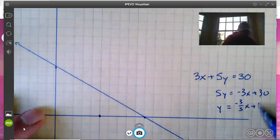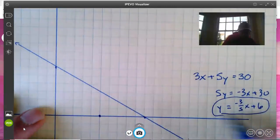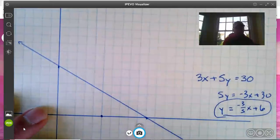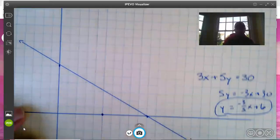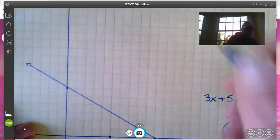Then we know it has a slope of negative 3/5 and a y-intercept of 6. Start at 6, then go down 3 over 5, down 3 over 5. Or we can just note that...